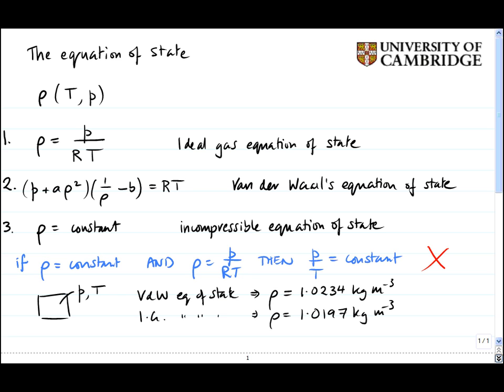If you are using the van der Waals equation of state, which is more accurate, then you can't also use the ideal gas equation of state. Similarly, if you're trying to do a calculation quickly, you might decide to use the ideal gas equation of state, in which case you need to throw away the van der Waals equation, because you can't use both of them at the same time.